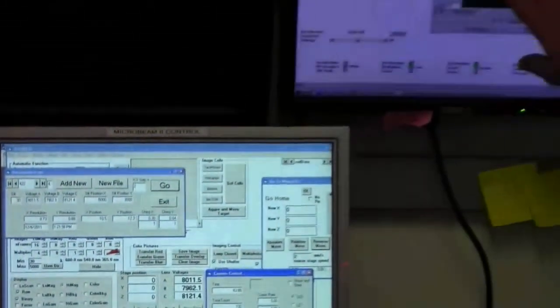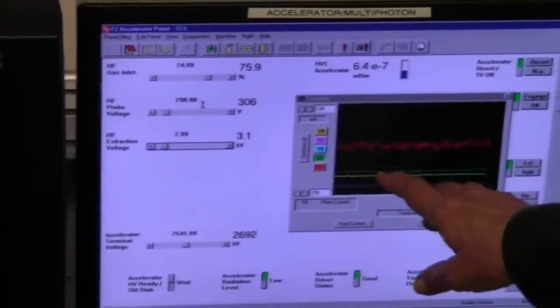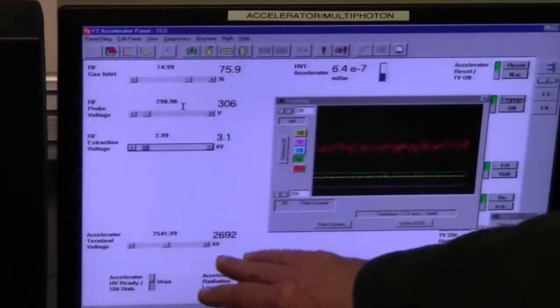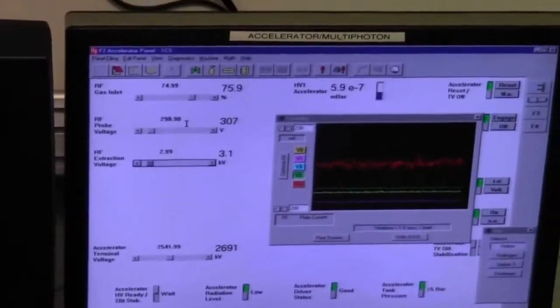There's another monitor here which is actually a parallel to the control monitor of the accelerator. The accelerator is downstairs and from here we can make minor adjustments on a number of parameters involved with running the accelerator.